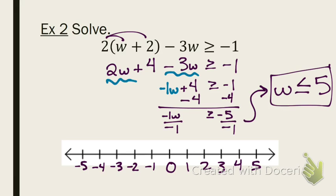So in this case, it's equal to, so we're going to have a closed circle. And we're shading to the left.